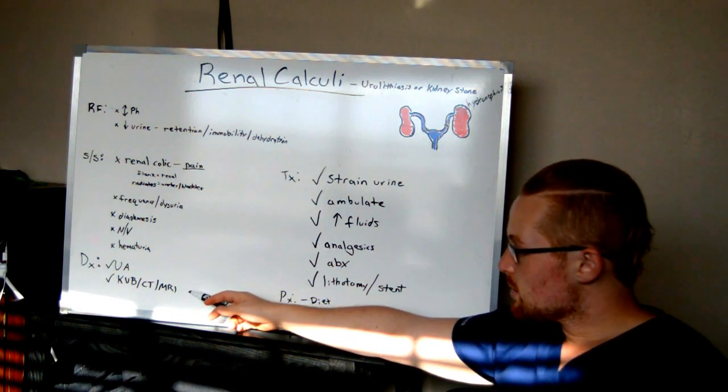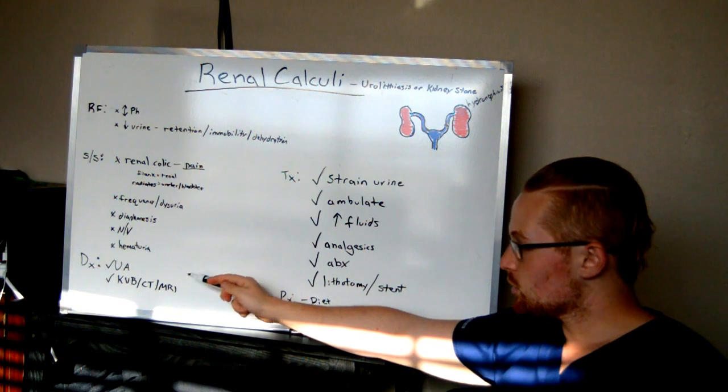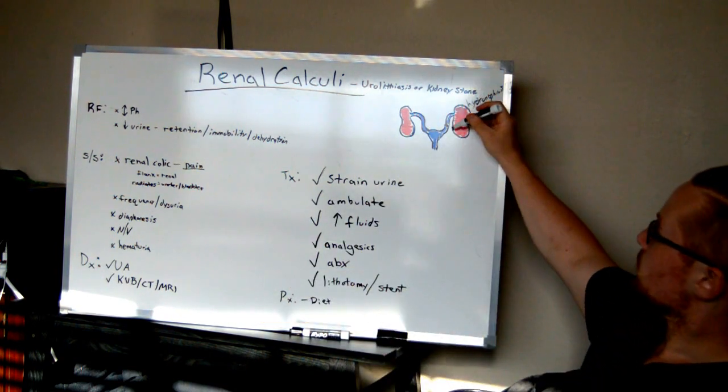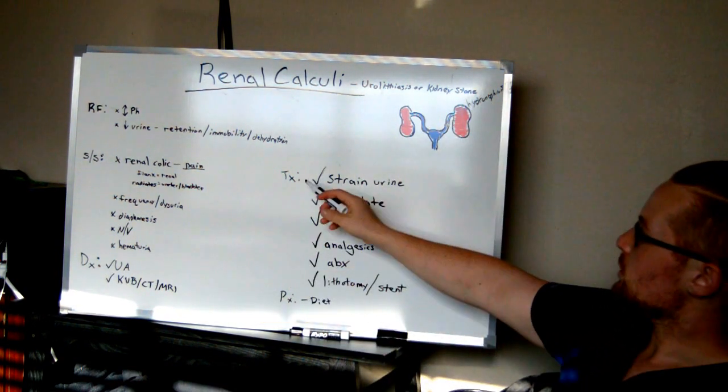They're going to do a CT, MRI, or an X-ray, called a KUB, kidney, ureters, and bladder. They'll look right here. You know what? They see a kidney stone there. So what are they going to do?